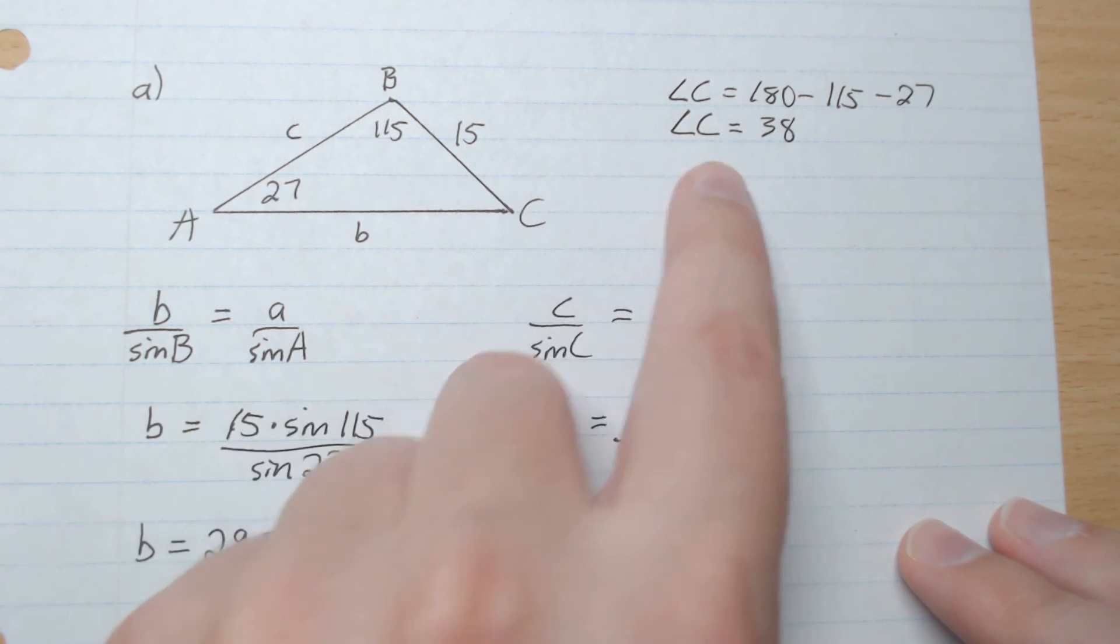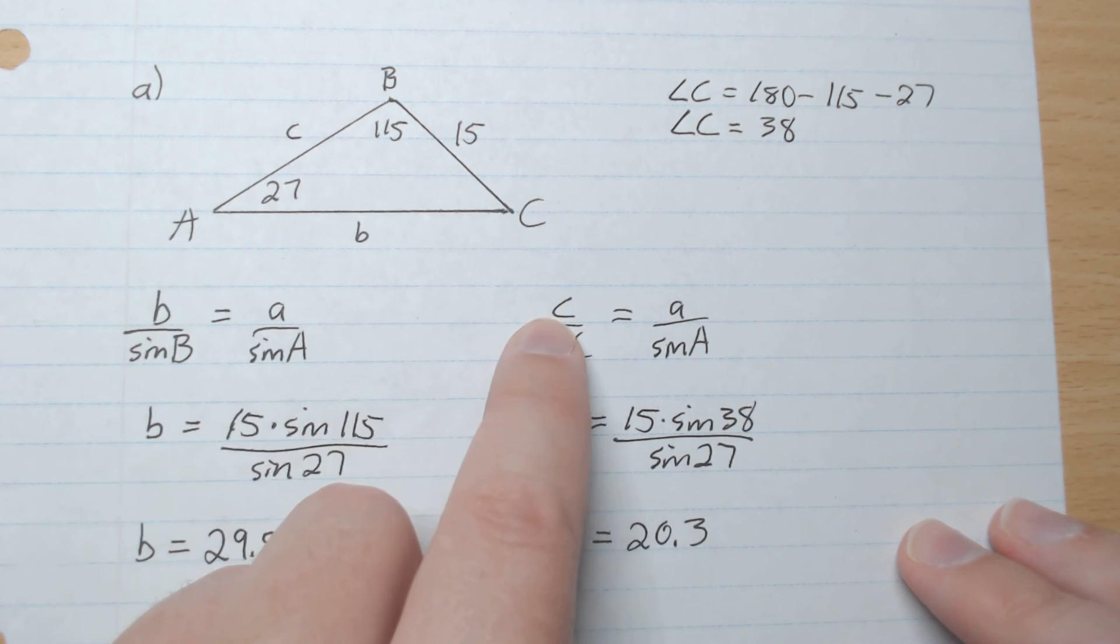We have angle C but not side c. So we're going to look for side c. We're going to multiply sine C to both sides, plug in what we know, and therefore c is 20.3.